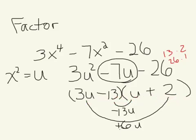But the last part is to go back to the original variables, because remember that was X. And so wherever you see a U, you want to replace it with what U is equal to, which is X squared. So the final answer would be, instead of 3U minus 13, it would be 3X squared minus 13.